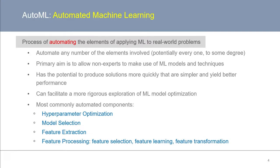The elements of a machine learning analysis pipeline most commonly automated by current AutoML methods include hyperparameter optimization, model and algorithm selection, feature extraction, and some elements of feature processing, such as feature selection, feature learning, and feature transformation.